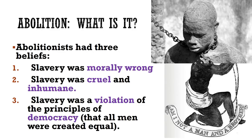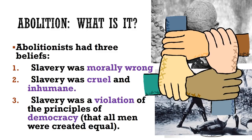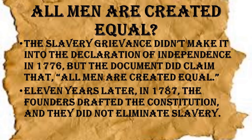Abolitionists had three major beliefs. One: slavery was morally wrong. Two: slavery was cruel and inhumane. And three: slavery was a violation of the principles of democracy, which means that all men, no matter the color of their skin, were created equal. What is interesting to note is that the slavery grievance or complaint did not make it into the Declaration of Independence in 1776, but the document did say that all men are created equal. Eleven years later, in 1787, the founders at the Constitutional Convention drafted the Constitution, and they did not eliminate slavery at that time.